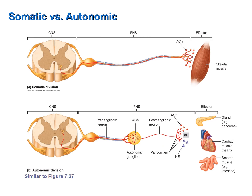Another difference between the somatic and autonomic divisions is the types of neurotransmitters they release. In the somatic division, nerve fibers release exclusively acetylcholine; nerve fibers that release acetylcholine are referred to as cholinergic nerve fibers. So all nerve fibers of the somatic division are cholinergic. In the autonomic division, however, some nerve fibers release acetylcholine while others release noradrenaline.